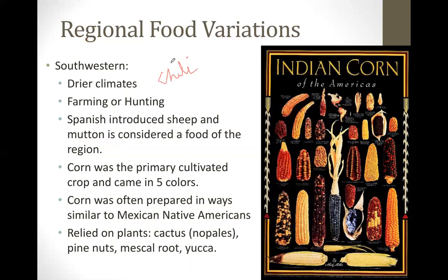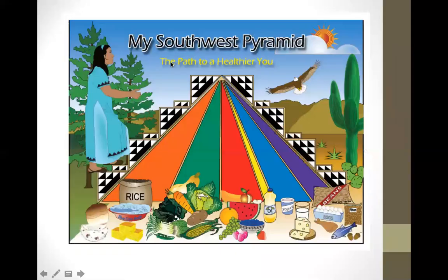Corn was prepared similarly to how Mexican Americans prepare corn. Beans were the second most important crop next to corn, followed by squash, pumpkins, cantaloupe, and so on. A southwest food pyramid focused on Native Americans prominently features whole foods: blue corn mash, beans, squash, corn, and chilies, with some processed foods also included.